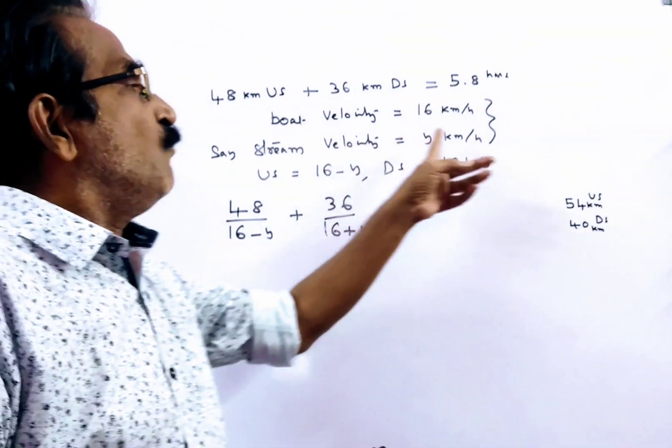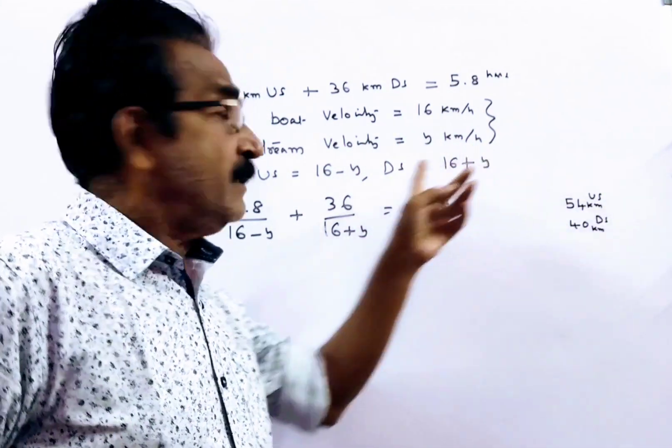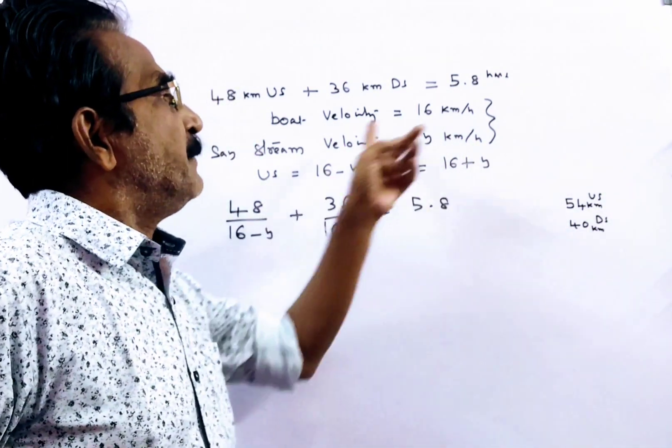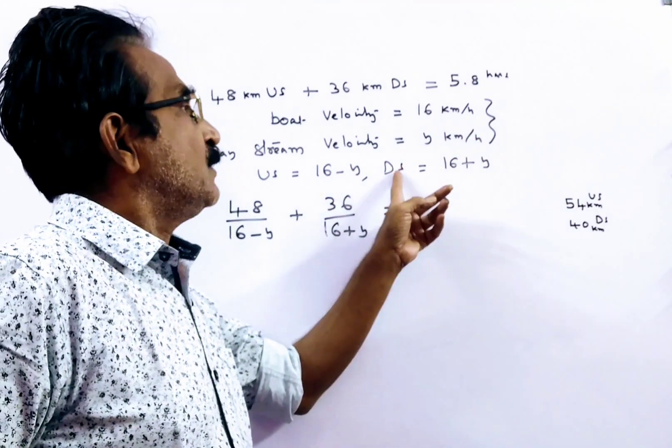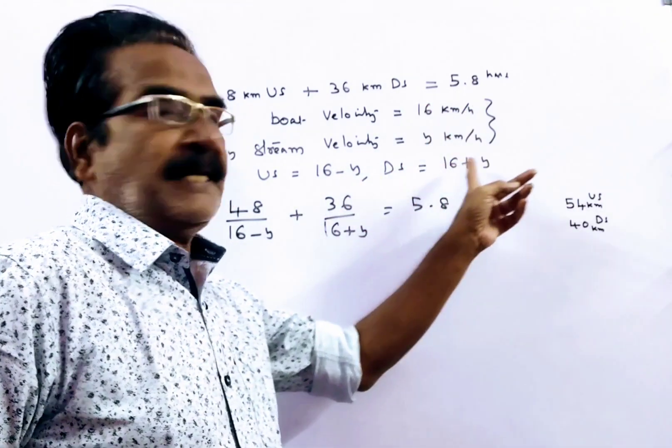Say stream velocity is y kmph. Then upstream velocity becomes 16 minus y, and downstream velocity becomes 16 plus y.